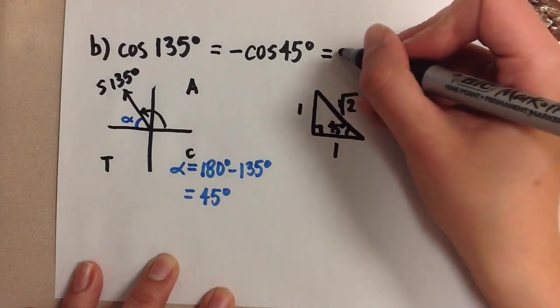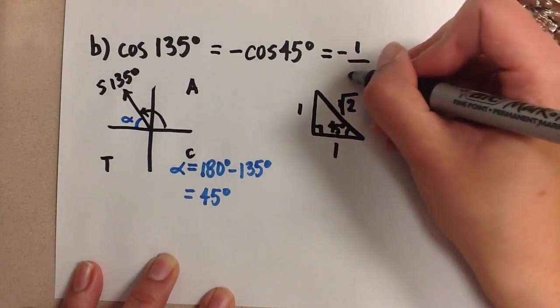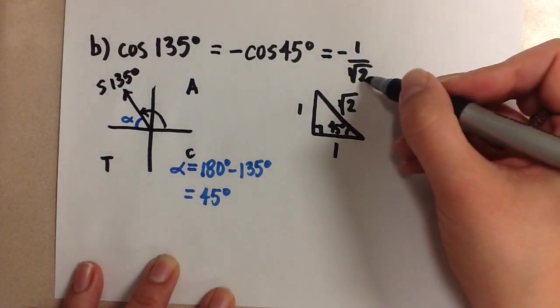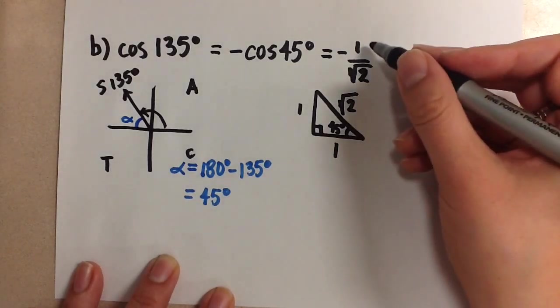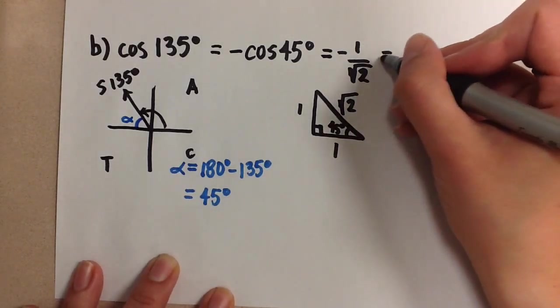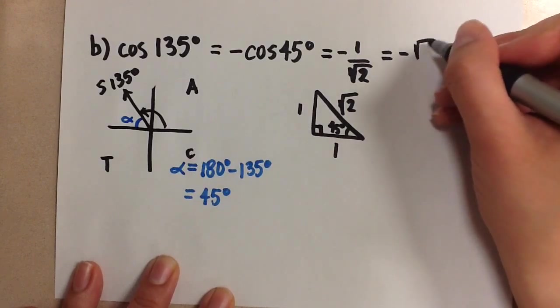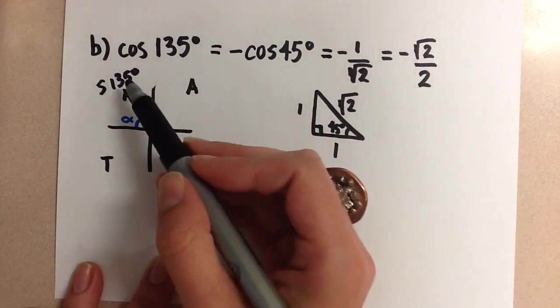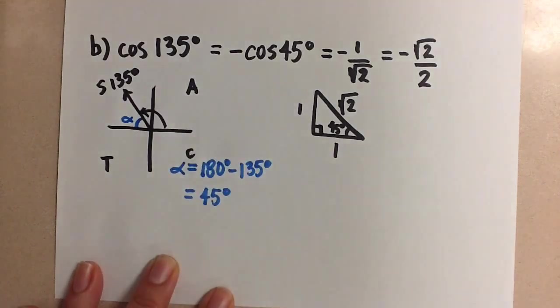So here we get negative 1 over root 2 for our value. If you want to rationalize this denominator, then you'll get negative root 2 over 2 as our answer for cosine of 135 degrees.